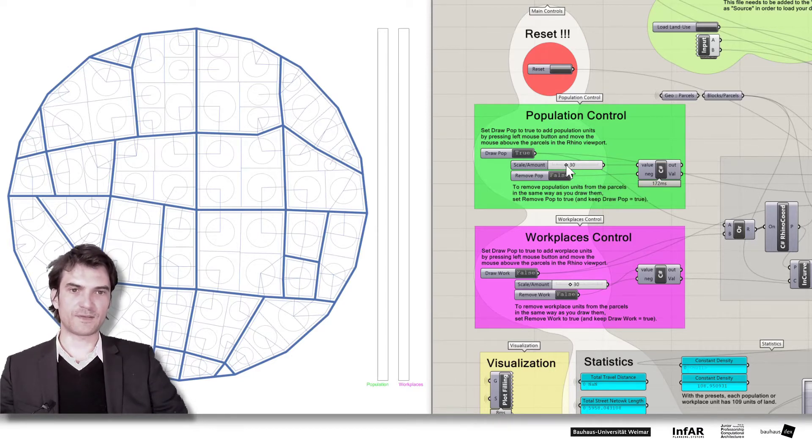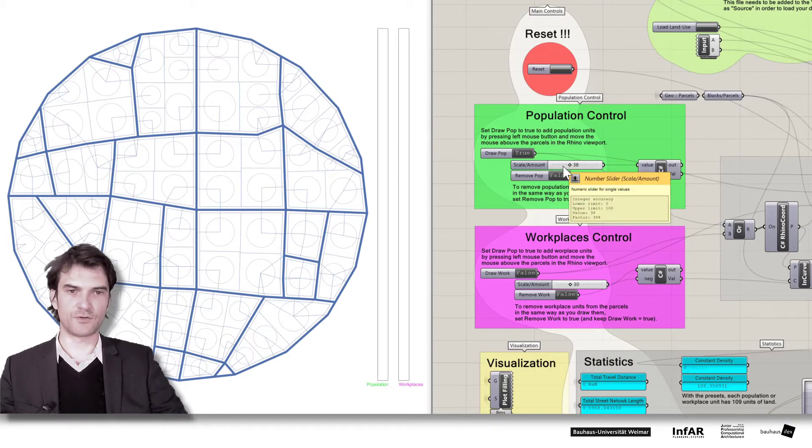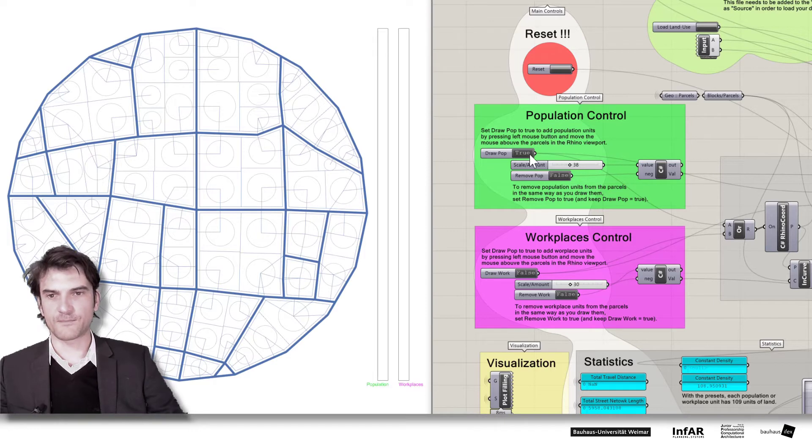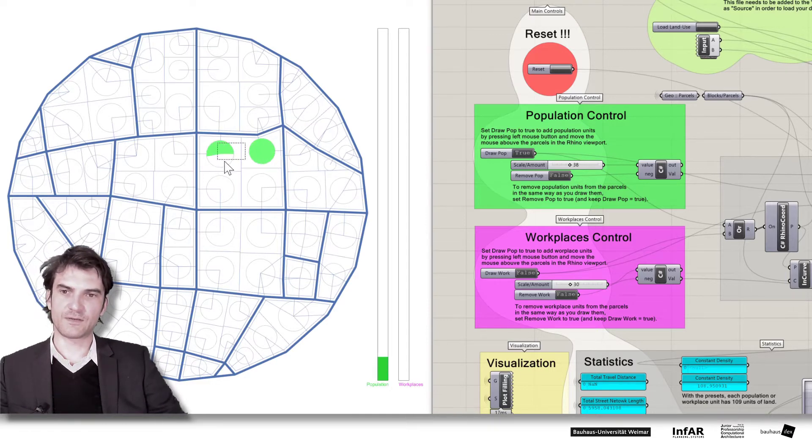And we have a scale. So this means how many units we want to add per move. If you imagine we use a brush by which we draw land uses or population units into our map here, that's the strength of your brush. So now if it's true and everything else is false, you can just hover your mouse above the Rhino viewport and the corresponding parcel into which you want to draw land uses and press the left mouse button. And you see these circles, the charts, they are filling up.